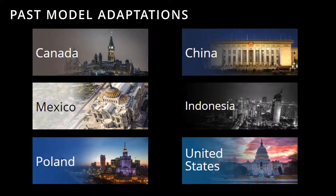As of March 2018, versions of the simulator have been constructed for six countries. The first version was built for China in partnership with two agencies within the Chinese central government. They used the tool to assess policies for inclusion in China's 13th Five-Year Plan, as well as ways of achieving China's commitment under the Paris Climate Accord. The second version for the United States was initially released in October 2015. It has been featured in the media, used in academic courses, and boasts hundreds of users per week.